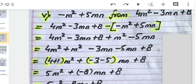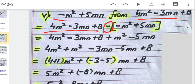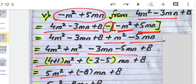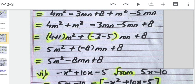The next part: subtract minus m² plus 5mn from 4m² minus 3mn plus 8. Write the second expression first, then negative sign, then (minus m² plus 5mn). Opening the bracket: negative m² becomes positive m², and positive 5mn becomes negative 5mn. Collecting like terms: 4m² plus m² is 5m²; minus 3mn minus 5mn is minus 8mn; and the constant is 8. Answer: 5m² minus 8mn plus 8.